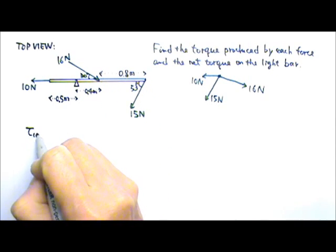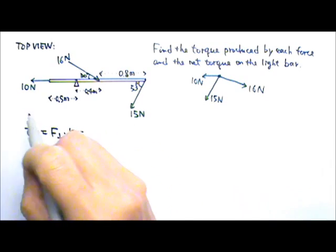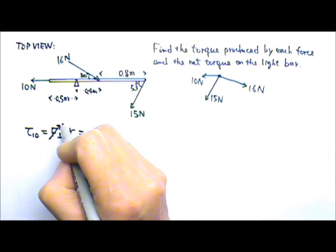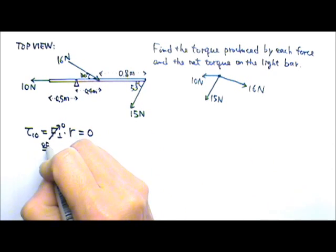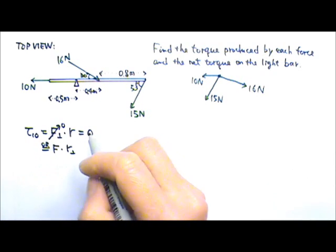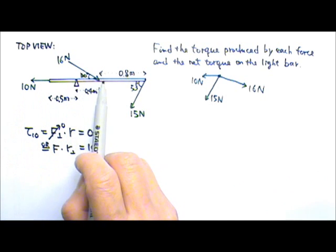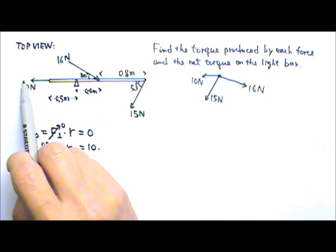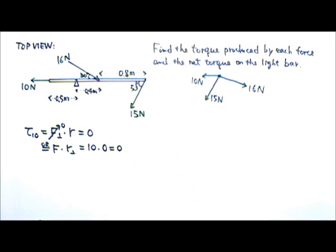Let's find the torque produced by the 10 newtons first. That would be the perpendicular component of the force times the distance. This 10 newtons has no component that's perpendicular to the bar, so the perpendicular component is 0, and therefore the torque is 0. Alternatively, using force times lever arm: the force is 10 newtons, and the lever arm is the distance between the line of force and the axis. The axis is right on the line of force, so that distance is 0, and therefore the torque is 0. Either way, you get the same answer: zero torque.